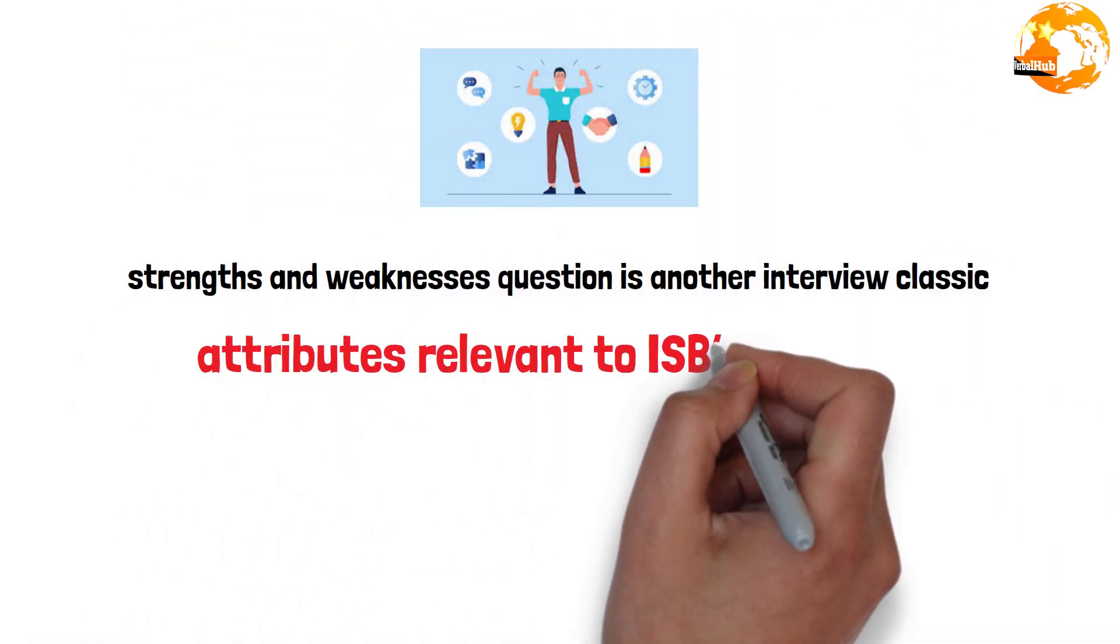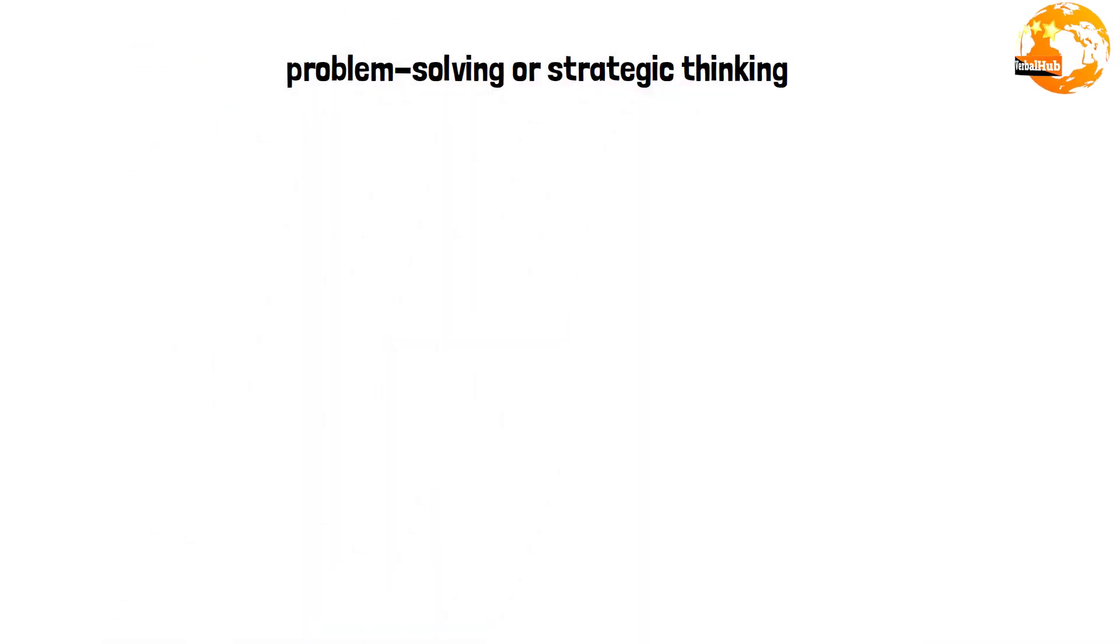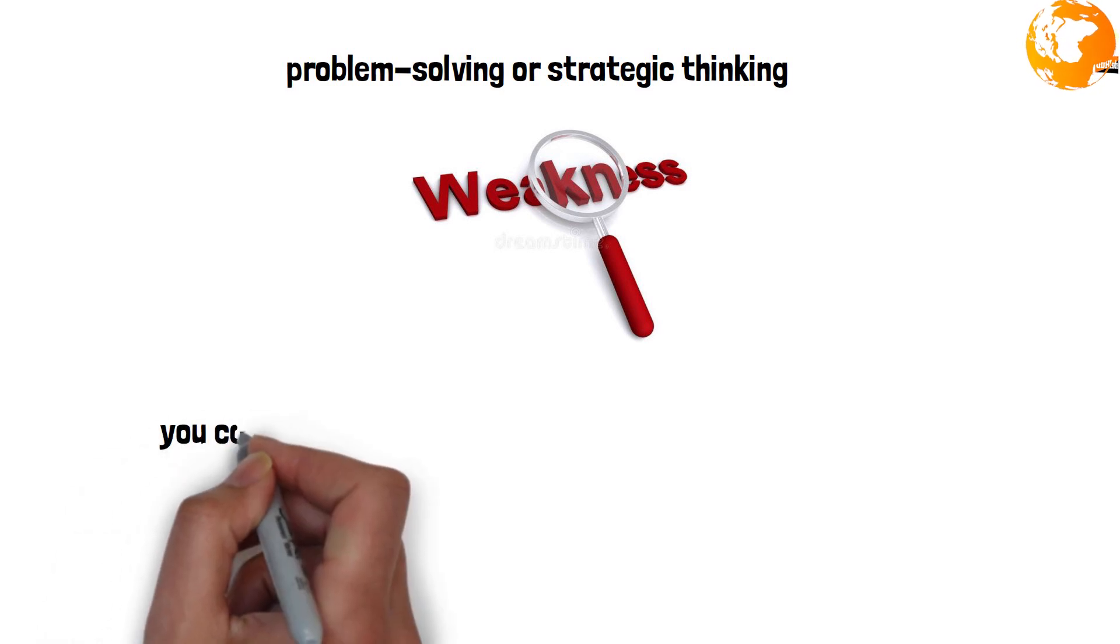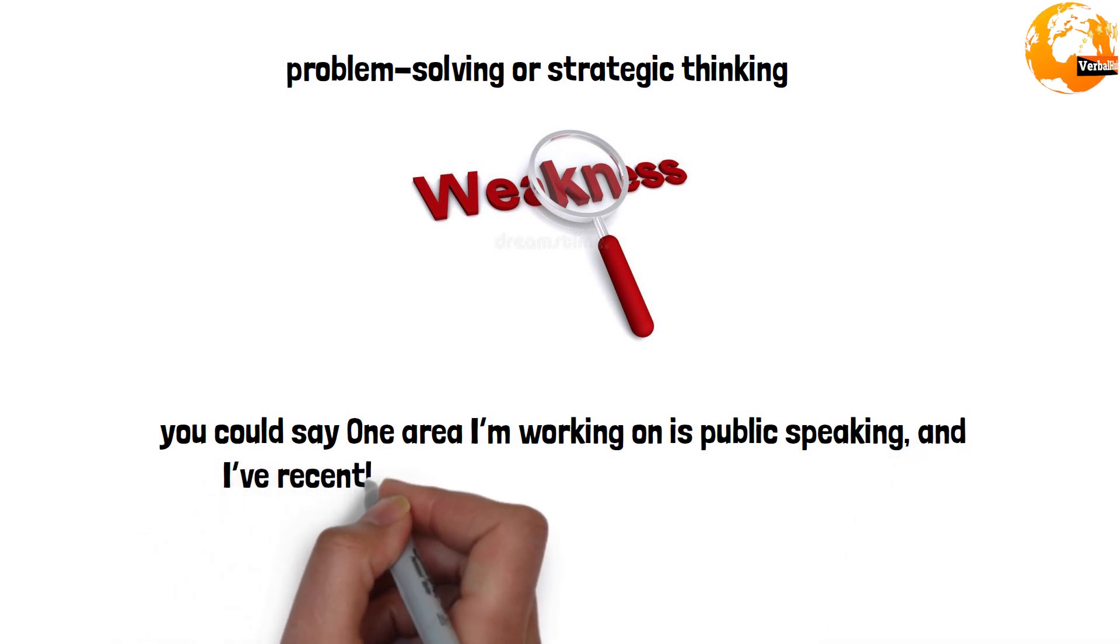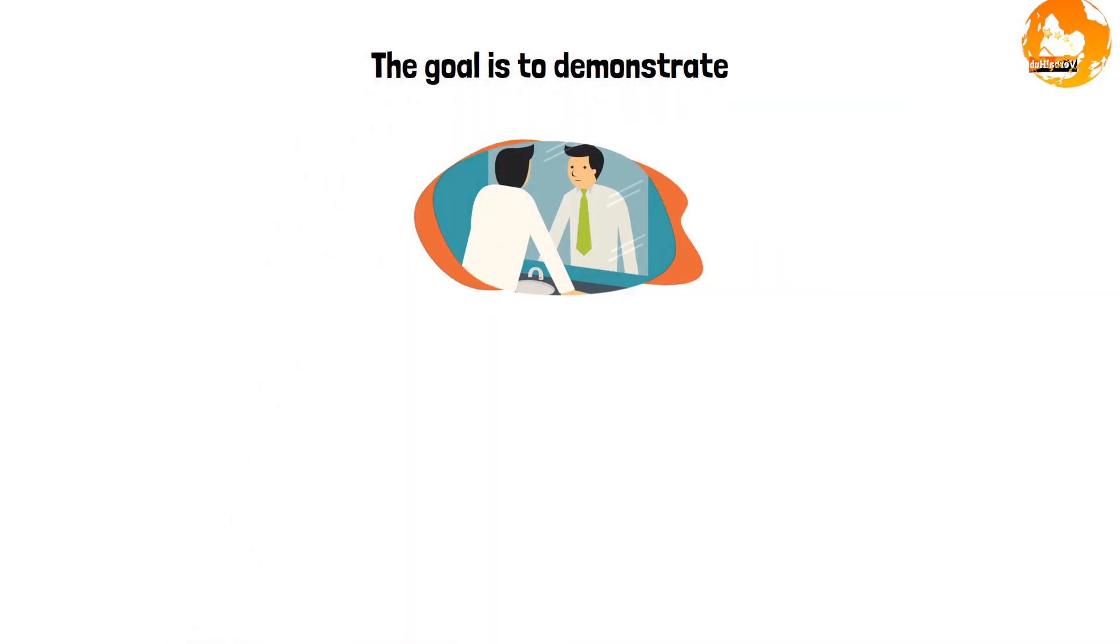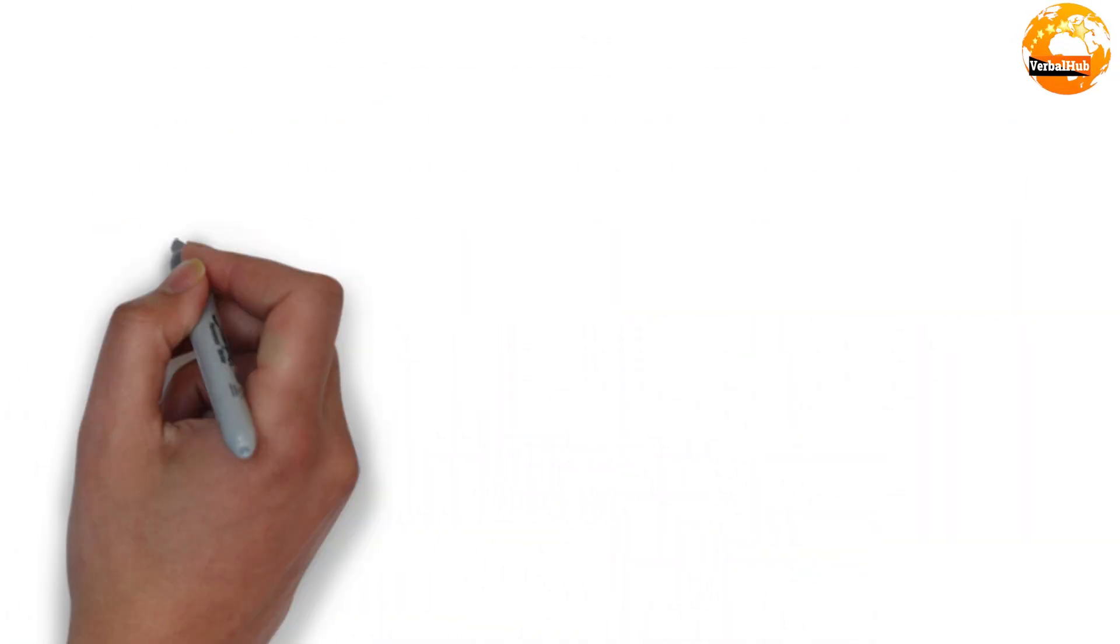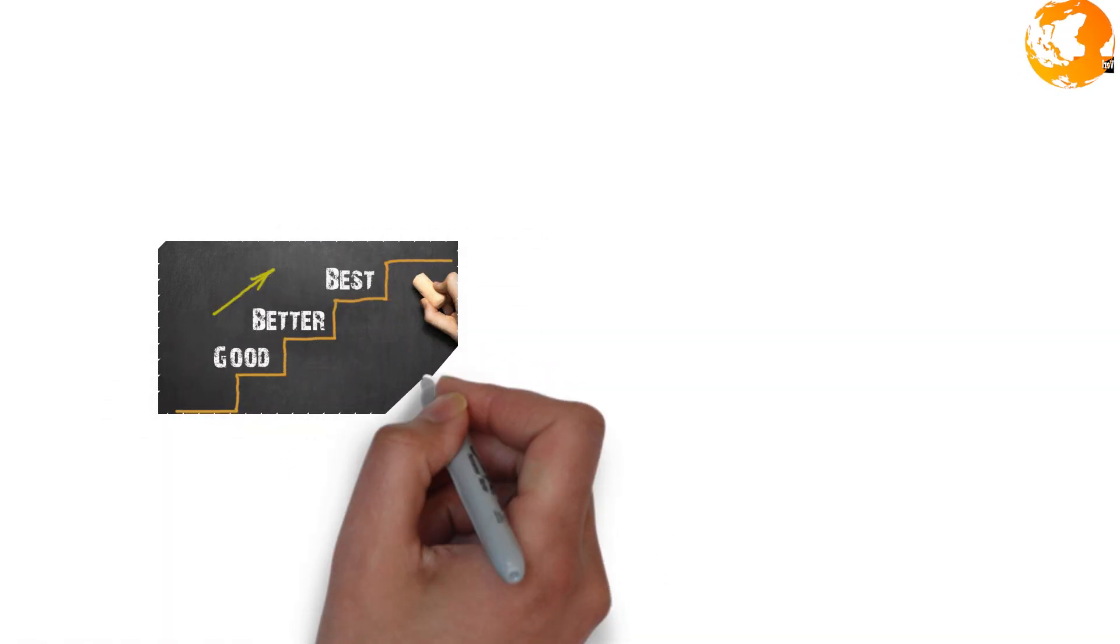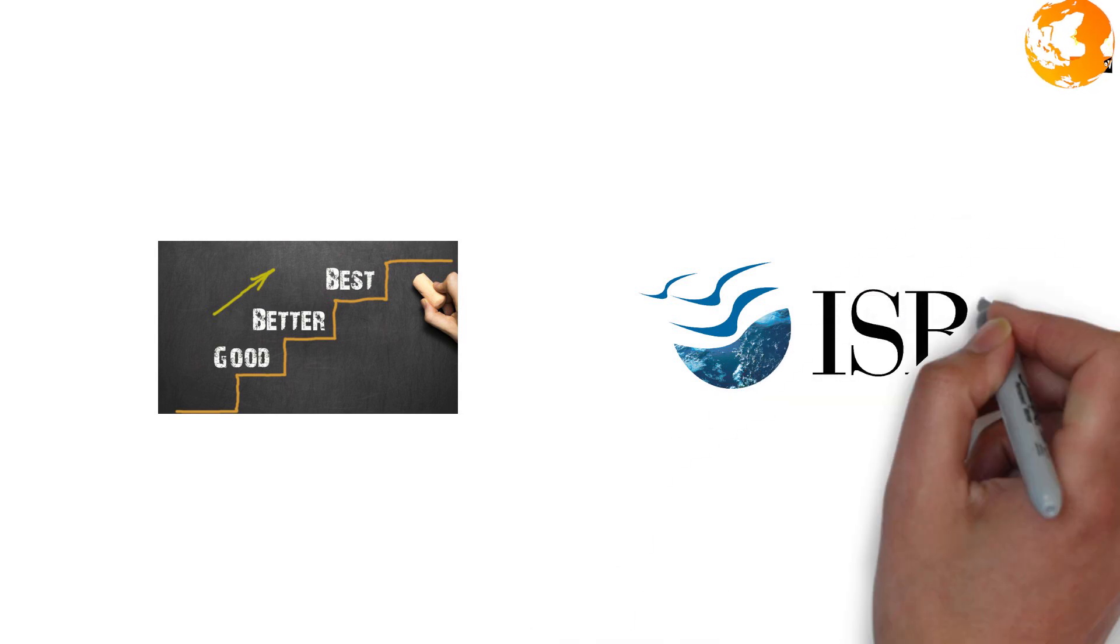The dreaded strengths and weaknesses question is another interview classic. For strengths, pick attributes relevant to ISB's program and business leadership, like problem-solving or strategic thinking. For weaknesses, be honest but show how you are working on them. For example, you could say 'One area I am working on is public speaking, and I have recently joined a Toastmasters club to improve.' Tips: The goal is to demonstrate self-awareness and a proactive attitude toward personal growth. ISB values candidates who are committed to continuous improvement. If you have scope for improvement and you show that through your discussion, ISB accepts and values this improvement excitement.